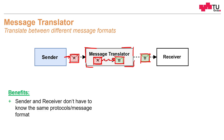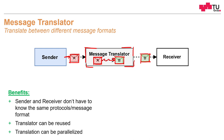What are the benefits? The biggest benefit is that sender and receiver don't have to speak the same language — they don't have to know the same protocols and message format. Only the message translator has to know. The translator can be reused, and translation can be parallelized, so translation of messages can run in parallel to the sender and the receiver. Neither of them has to take care about the translation and the processing behind this.